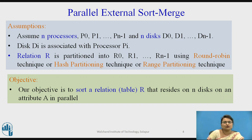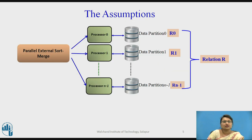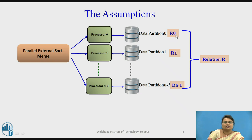For example, if the relation is an employee table and you want to sort it by salary, then salary becomes the sorting attribute. So we are sorting the employee relation by a salary attribute. We have processors p0, p1, ..., p(n-1) and disks d0, d1, ..., d(n-1), with the relation already partitioned as r0, r1, ..., r(n-1), and we are applying parallel external sort merge.